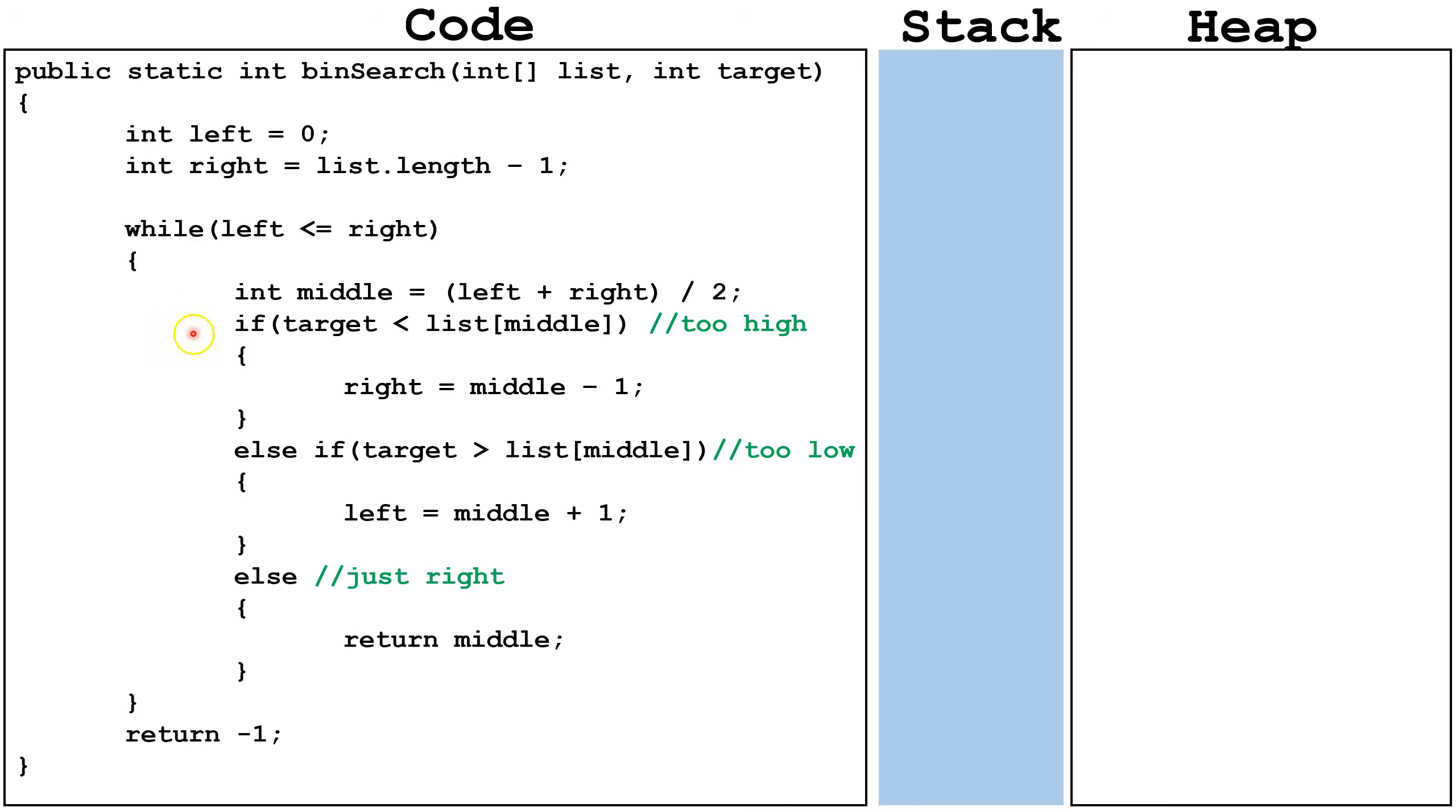This line of code checks if the target, the number we are looking for, is less than the middle of the list we are looking at. This line of code checks the target is greater than the item we are currently looking at.